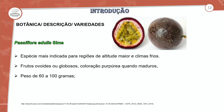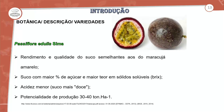A Passiflora edulis é a espécie mais indicada para regiões de altitudes maiores e climas frios. O fruto é ovoide ou globoso, de coloração púrpura por fora e rosado por dentro, pesando de 60 a 100 gramas. O rendimento e qualidade do suco são semelhantes ao do maracujá amarelo. O suco apresenta maior porcentagem de glicose, menor teor de sólidos solúveis, menor acidez e sucos mais doces. Potencial de produção de 30 a 40 toneladas, considerando os tratos culturais.